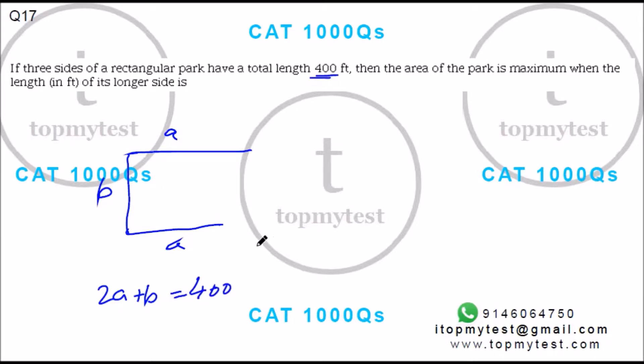Now you need to find when is the area of the park maximum when the length of the longer side is. You don't know which is the longer side yet.